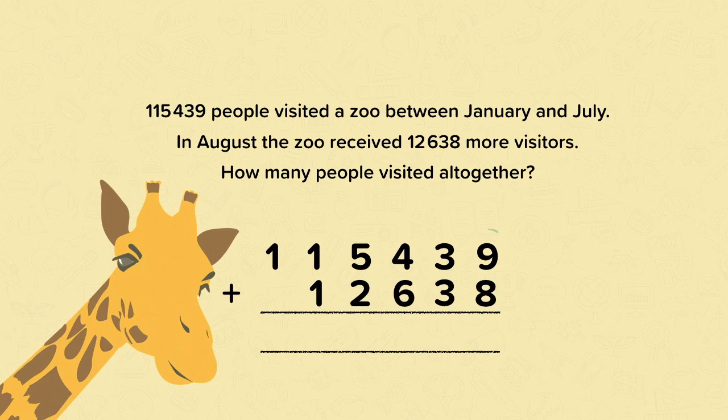Straight away we can see that we're going to need to exchange when we're adding the digits in the ones place, because nine add eight is seventeen. And we know that we can't have more than nine in one place. So we put the seven ones from seventeen in the ones place, and then we exchange those ten ones into a ten. And that goes in the tens place. So now when we're adding those tens, we've got three tens add three tens. But then we must remember that extra ten that we've exchanged from the ones. So the total of the tens is now seven.